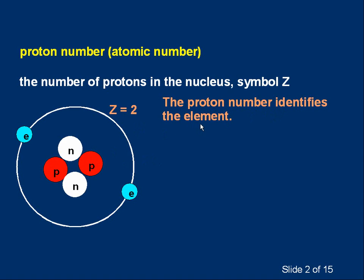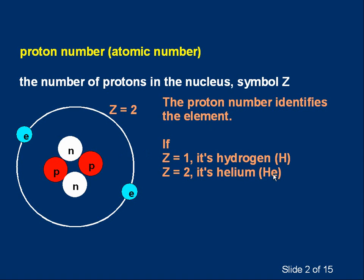It tells you what type of element it is. In this diagram, we've got two protons — that makes it helium. Let's go through the first three elements. If Z is one, if there's only one proton, it's hydrogen, symbol H. If we've got two protons, Z equals two, that makes it helium, symbol He. If Z is three protons, it's lithium, symbol Li. It's worth remembering those first three elements, their numbers and their symbols.